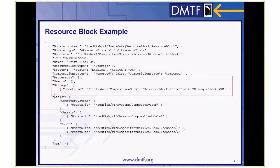This particular resource block is showing three types of component resources: processors, memory, and storage. Other types of components, such as simple storage, Ethernet interfaces, and network interfaces, are not reported by the service. Of the three types of components shown, only storage has a resource. A client can use these links to get more information about the components within the resource block.